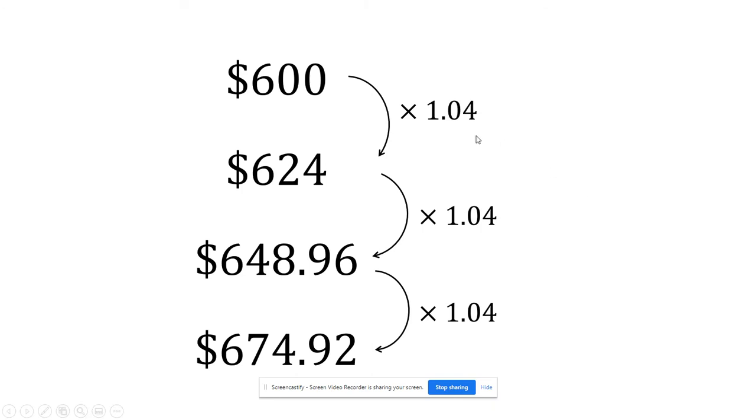But if we look at what we're doing to get each step, we're multiplying by the same thing each time. So we're going to multiply by 1.04 each time. That's basically 100% of the amount that we have plus the 4% of the interest gives me my new balance.